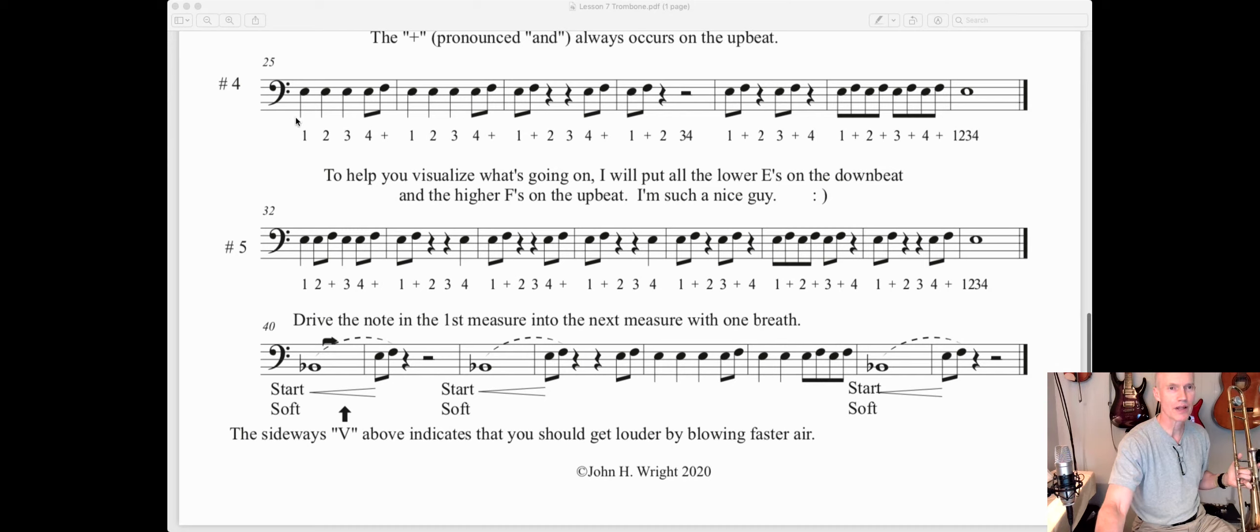All right, number five. You got a quarter note on beat one, then two eighth notes dividing up beat two. So it's 'one, two and three, four and, one and two, three, four, one and two, three, four and, one and two, three, four, one and two and three and four, one and two, three, four and, one, two, three, four.'